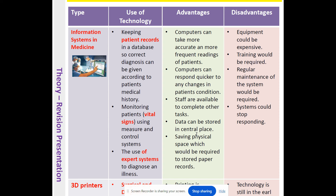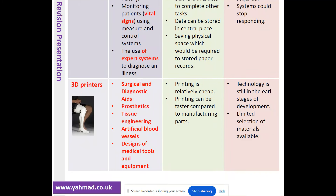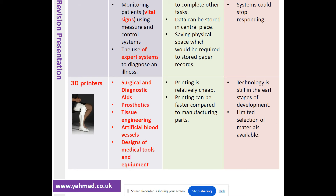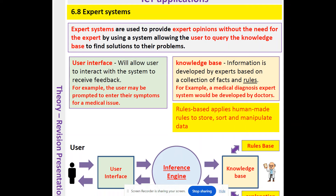Disadvantages of computers in medicine: the equipment is initially expensive to purchase, training is required, regular maintenance of the system is needed, and the system could stop responding. We can also use 3D printers in hospital environments for surgical and diagnostic aids — prosthetic knees or legs, tissue engineering, artificial blood vessels, and the design of medical tools and equipment. 3D printing is relatively cheap, printing can be faster than traditional manufacturing, though the technology is still in early stages of development with a limited selection of materials available — although it's advancing rapidly.